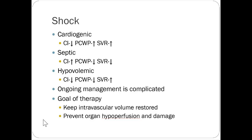There are three types of shock: cardiogenic, septic, and hypovolemic. In cardiogenic shock, cardiac index goes down, wedge pressure is up, and vascular resistance is up. In septic shock, cardiac index goes up, wedge pressure goes down, and vascular resistance goes down. In hypovolemic shock, it's compensatory. Ongoing management is quite complicated and you might not initially know what's causing the shock because they can present somewhat similarly.